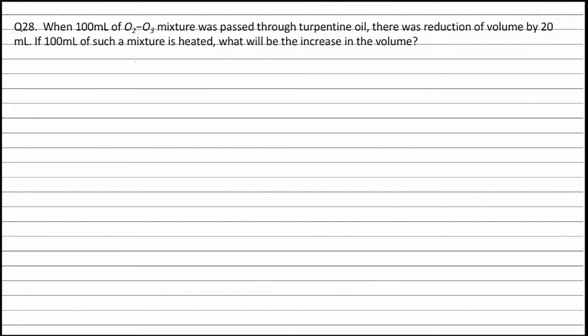Total volume of oxygen and ozone is equal to 100 ml. On treatment with turpentine oil, the reduction in volume is 20 ml and this is due to the absorption of ozone by turpentine oil.